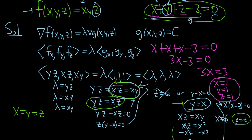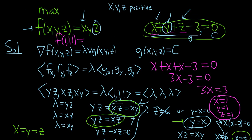Now we just plug these into the original function to get the answer. Since we wanted the maximum, this is going to be 1 × 1 × 1 = 1. That is the maximum. I hope this video has been helpful. Thank you.